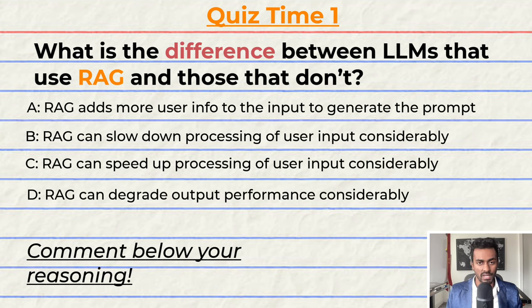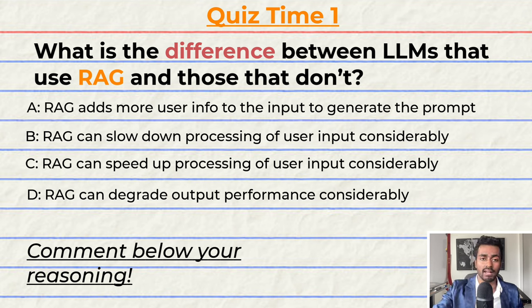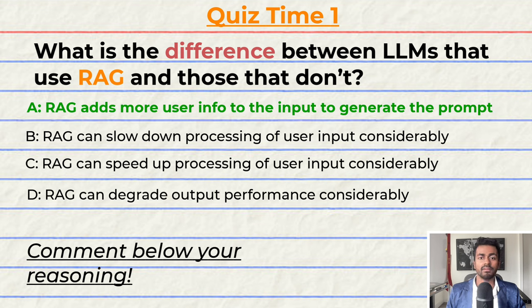Quiz time — have you been paying attention? What's the difference between LLMs that use RAG and those that do not? A: RAG adds more information to the user input to generate the prompt. B: RAG can slow down processing the user input considerably. C: RAG can speed up processing the user input considerably. Or D: RAG can degrade output performance considerably. Note that multiple options may be correct. The correct answer is A — but can you tell me why? Give your reasoning down in the comments below and let's have a discussion.